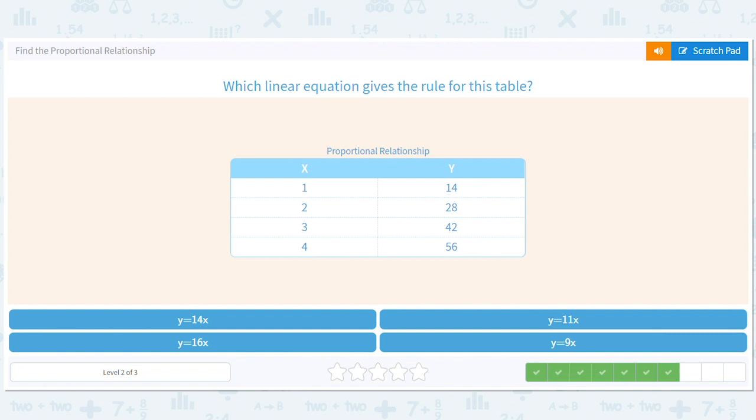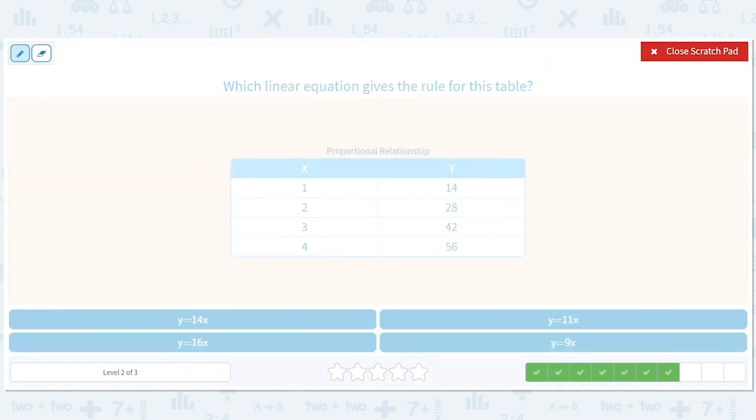All right. How about this? Well, we have 14 divided by 1 equals 14. 28 divided by 2 equals 14. So we're going to have y equals 14x.